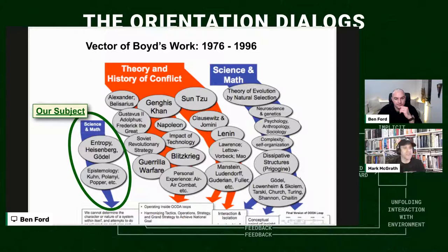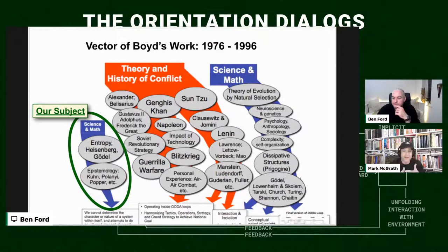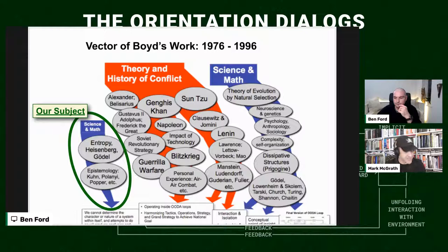Sun Tzu's Art of War was the one he had the hardest time trying to punch holes in because he thought it was a superior work. Even then, John Boyd was not someone to take something at face value — he would look at multiple translations because sometimes the translator's point of view comes through. I've tried to follow his example there, and I have about six or seven different translations of the Art of War.